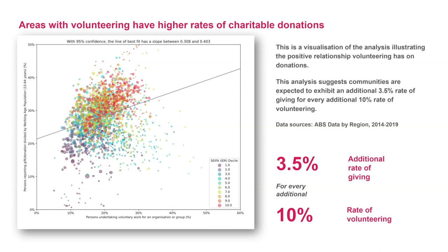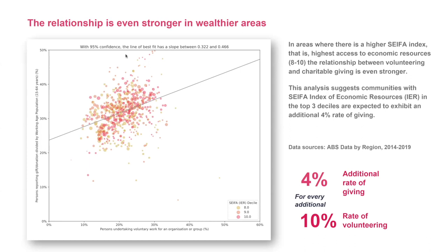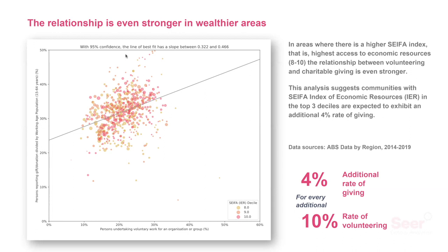So that was an interesting result. The idea behind it was to assemble those various correlating factors together into what we call the SEER Giving Index — an index which speaks to the relative degree of engagement at a community level with giving of time and of money. Now that's available on the SEER platform as an asset that communities can draw on to understand within the region they're interested in where the real pockets of opportunity might be, and more broadly what the opportunity looks like.